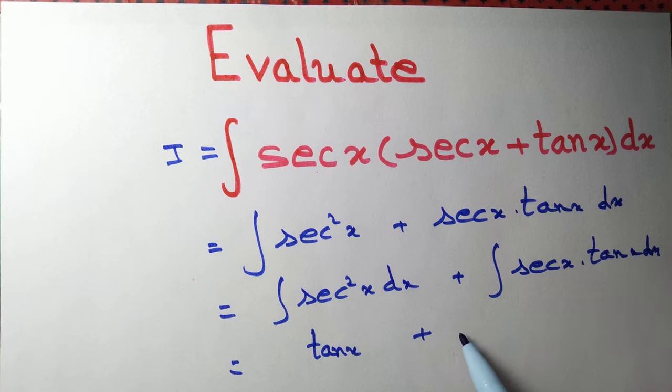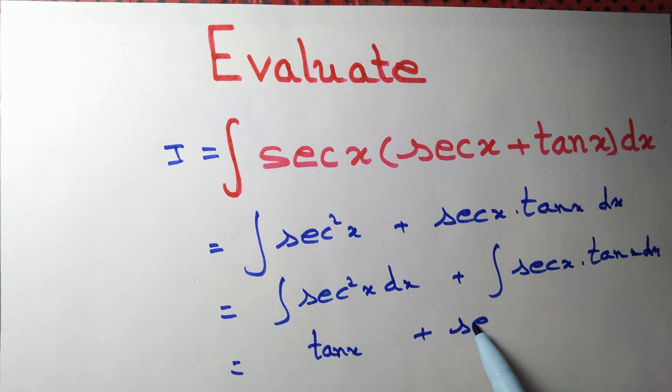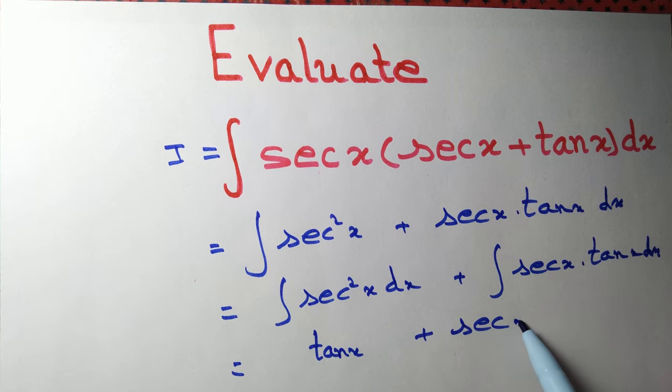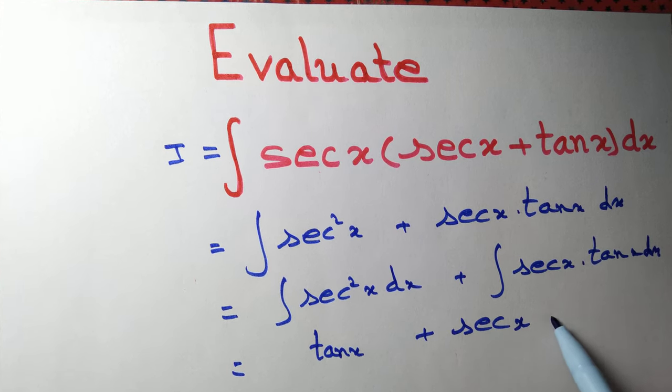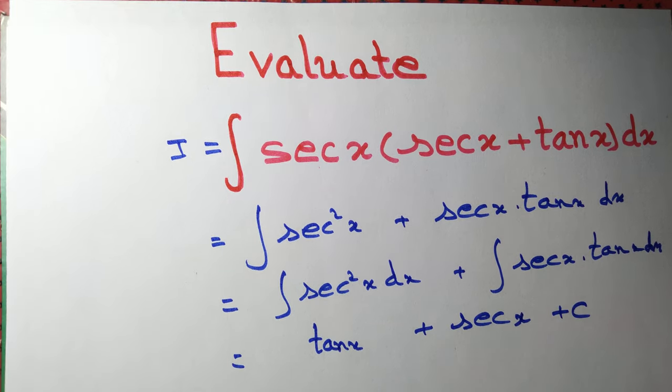The integral of sec x tan x is sec x. Finally, we add the constant of integration, and we are done.